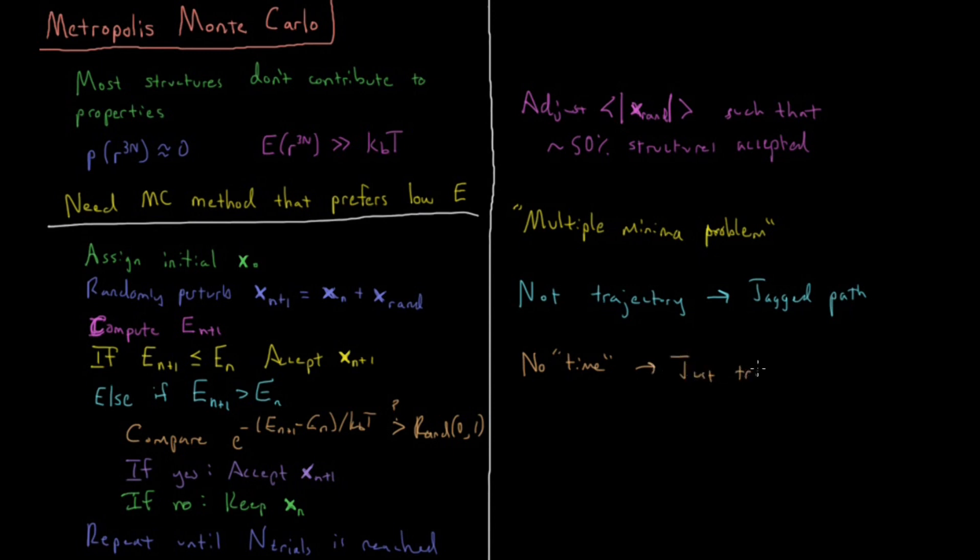It is just trials—the number of trials or iterations in our algorithm, until we've got enough that we're sufficiently satisfied we've sampled enough. Our properties, our average energies, average bond lengths, whatever we have—we're satisfied we have a reasonable answer and the error is fairly small in that simulated value.